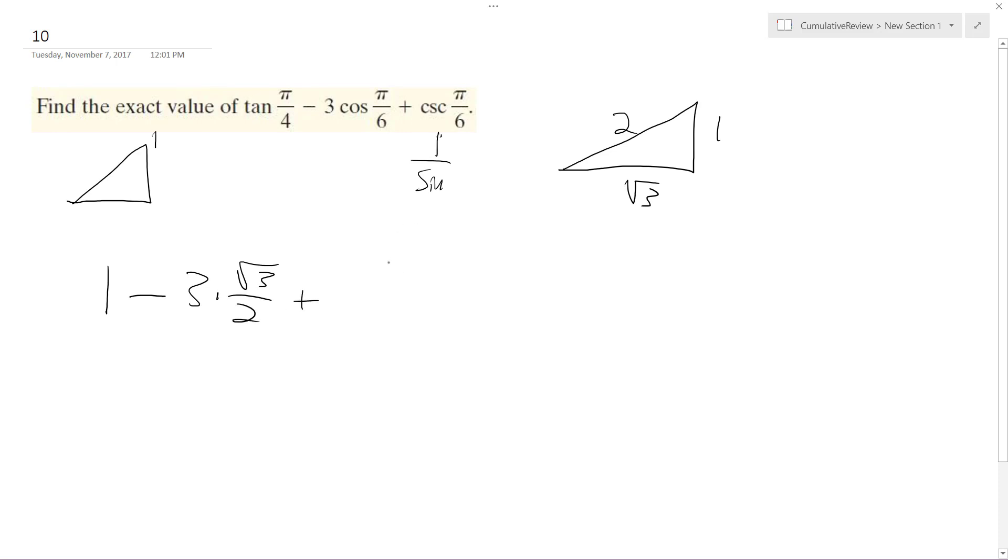And then cosecant 1 over sine, so that ends up being plus 1 half. Or excuse me, that's not right. That's 1 over 1 half, which is 2. So, 1 minus 3 root 3 over 2 plus 2.